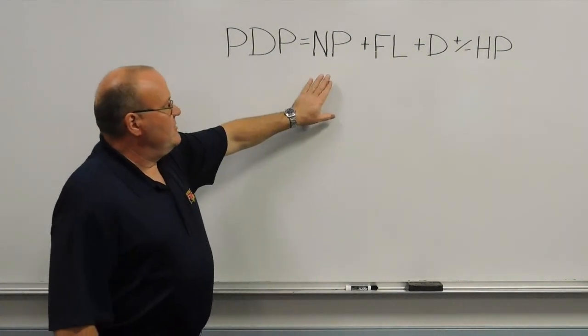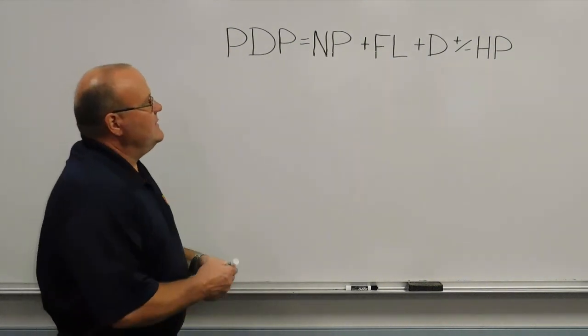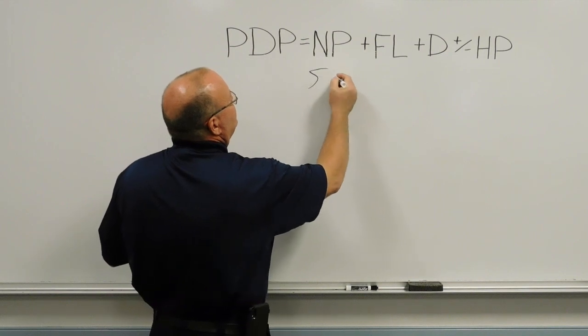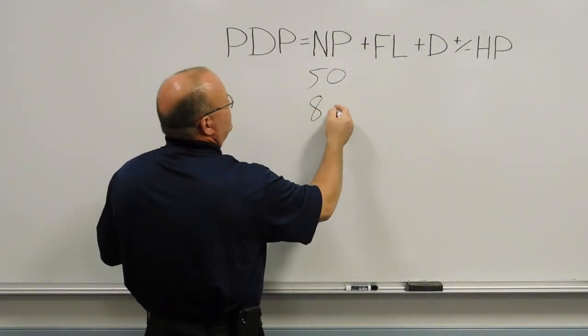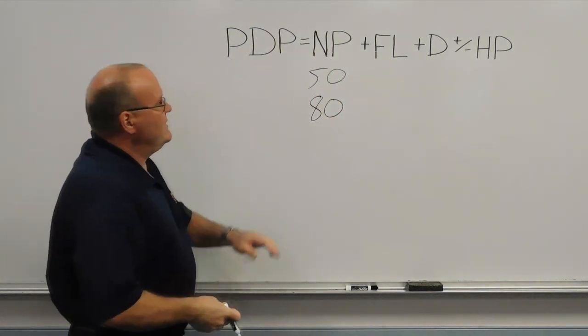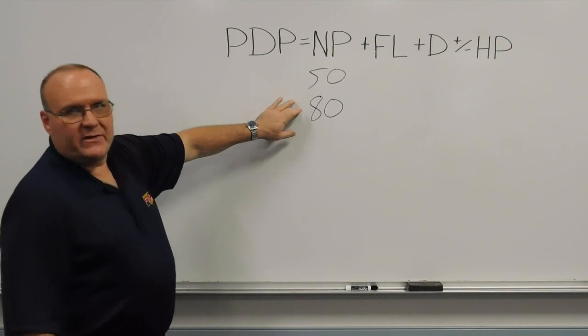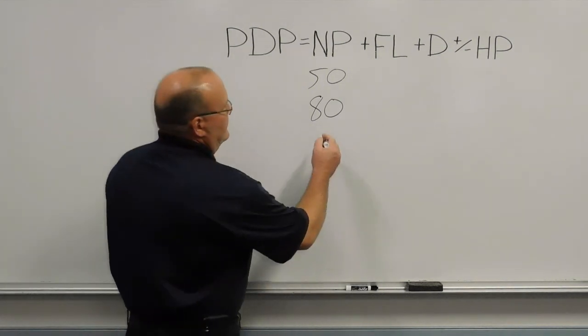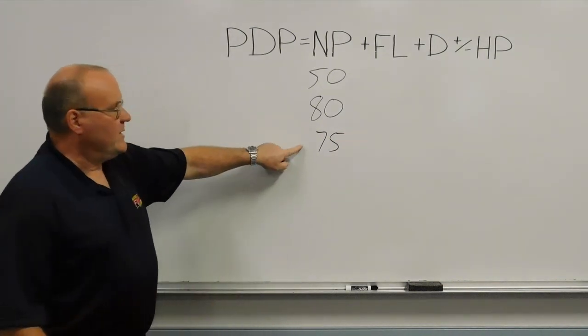So just in dealing with the nozzle pressure, there's four numbers that we would typically plug in there. And those would be if we had a solid stream hand line, 50 pounds. If we had a solid stream master stream, such as a portable monitor or a deck gun, it would be 80 pounds if they had a stack tube. If we had low pressure fog nozzles on our hand lines, that number would be 75.